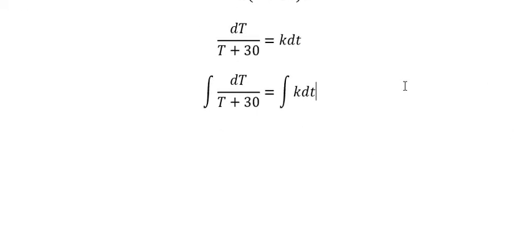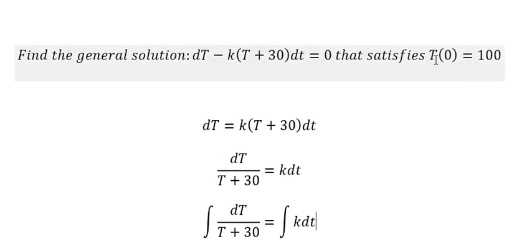So this one you will get ln of the absolute value of capital T plus 30 equals to kt plus C. Now we have the conditions in here.